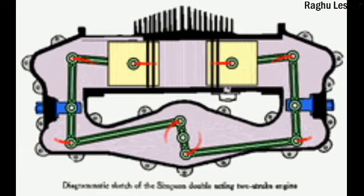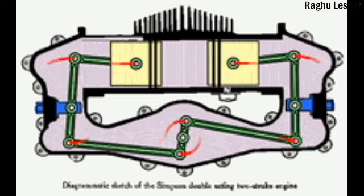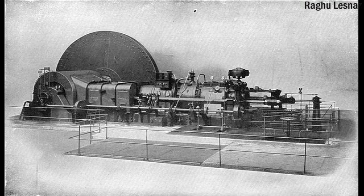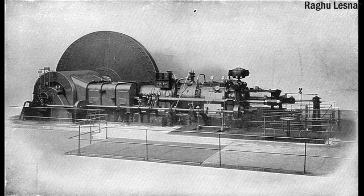This type of engine configuration dates at least back as far as 1914, as a two-stroke petrol engine referred to as the Simpson's balanced two-stroke was described in the motorcycle magazine of this date.